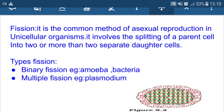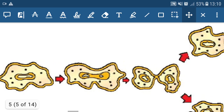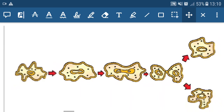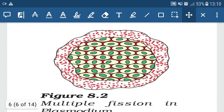In multiple fission, one cell divides to form many daughter organisms — for example, Plasmodium. In any division process there are two steps: division of the nucleus, known as karyokinesis, and division of the cytoplasm, known as cytokinesis. In amoeba, the nucleus divides into two, the cytoplasm divides and surrounds each nucleus, and two daughter organisms are formed — this is binary fission. In Plasmodium (multiple fission), one nucleus divides to form many nuclei, cytoplasm divides and surrounds the nuclei forming many daughter organisms enclosed in a thick cyst wall. During favorable conditions the cyst wall breaks and daughter organisms are released.